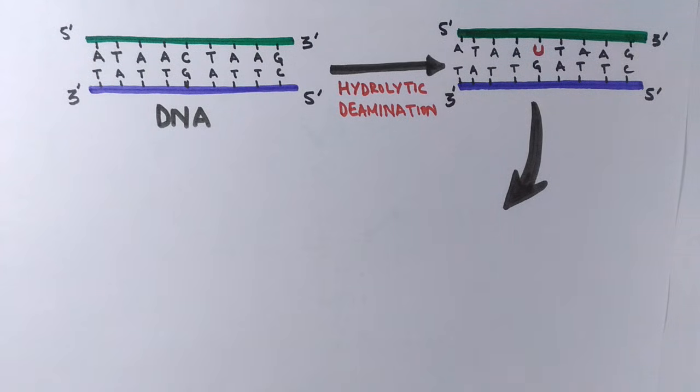The base should be cytosine here and DNA polymerase will complementarily synthesize guanine. But this does not happen—we have uracil instead of cytosine here, and for the complementary base uracil, adenine will be synthesized by DNA polymerase during replication.